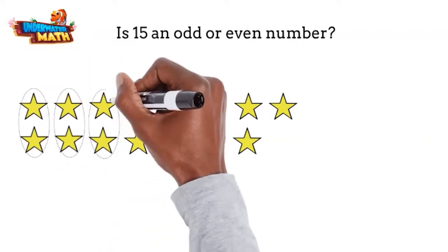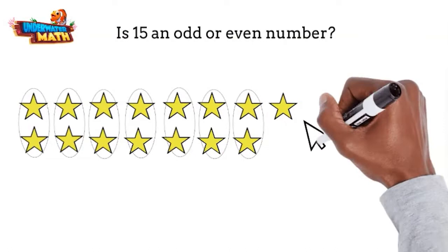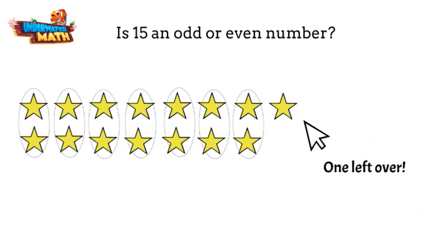2, 4, 6, 8, 10, 12, 14, and 15. Oh no, we have pairs of stars until this very last one. Since there is one left over, that means 15 is an odd number.